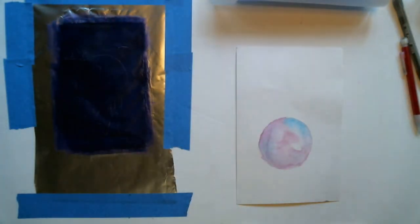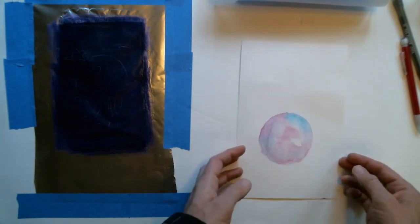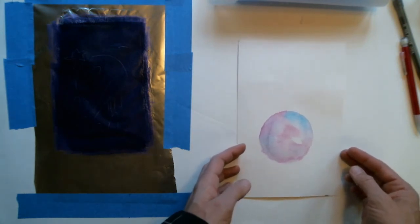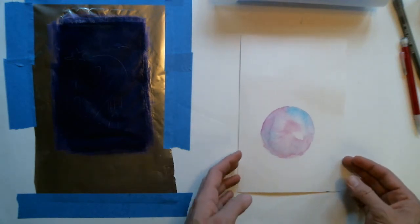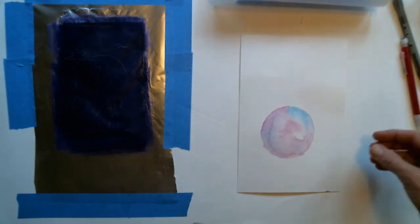Dry point is when you're using a metal plate, you scratch into it, and the lines that are below the surface hold the ink and they're kind of fuzzy. This is a very low tech way of achieving something that you would otherwise need to press in order to create.